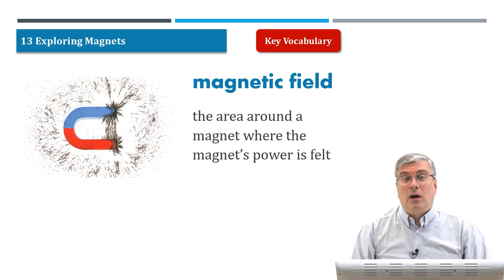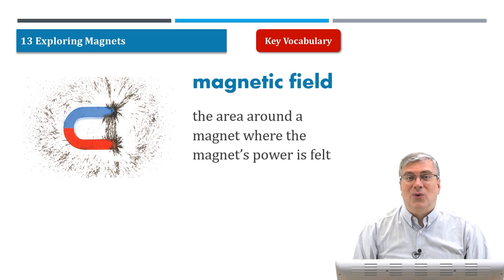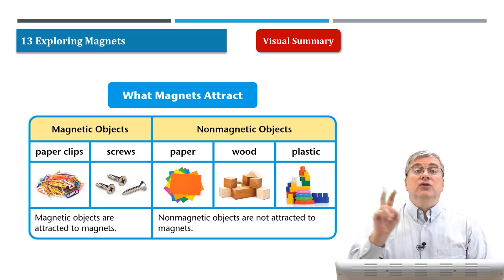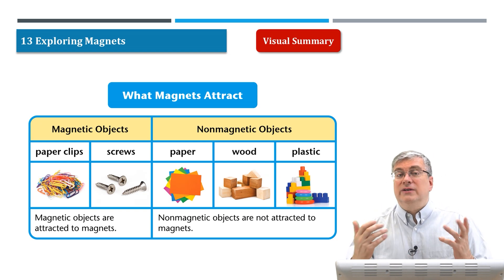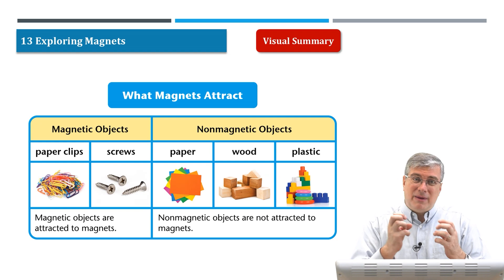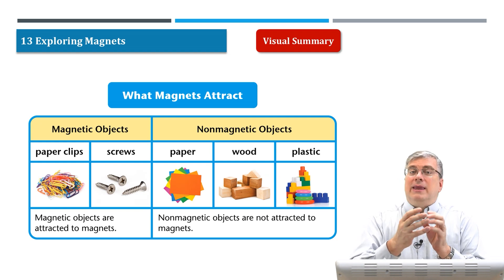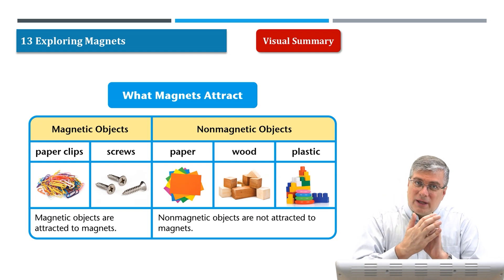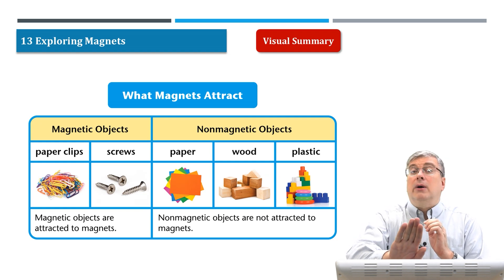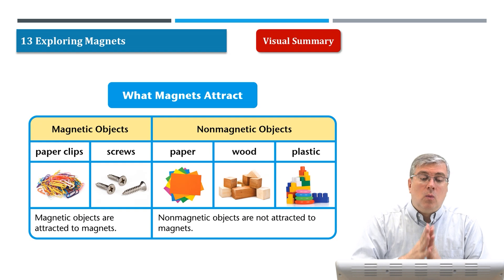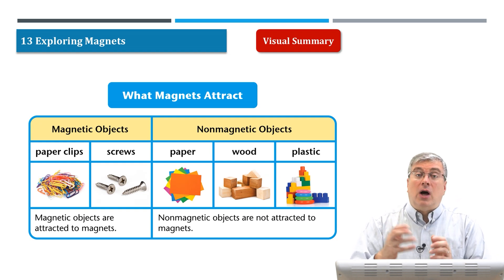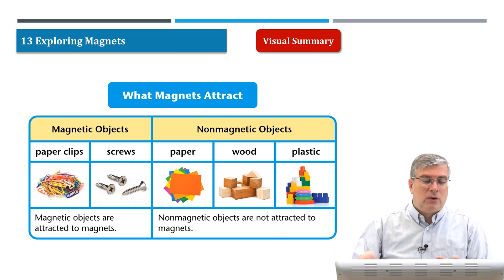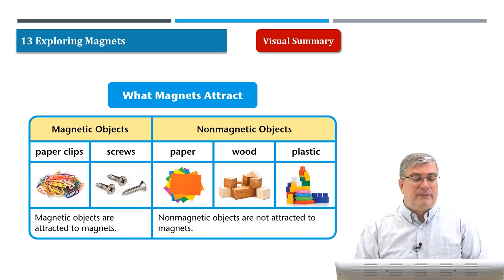Those are our vocabulary words for this lesson. Let's talk about the two main ideas in this unit. The first idea is what magnets attract. We talked about magnets and the magnetic field around a magnet. That field will either attract another magnetic object or it will repel another magnetic object. So what do magnets attract? They attract other magnetic objects. What are examples of magnetic objects?